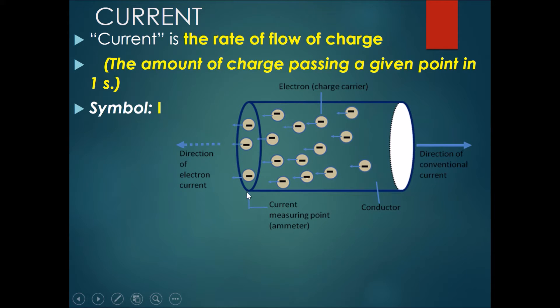He takes a look at his stopwatch and counts the number of cars that pass by this section in exactly one second, and the number that he gets would be the current or the rate of flow of charge. Basically how many cars pass by him per second.